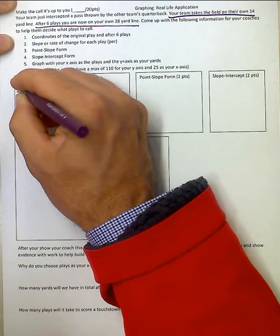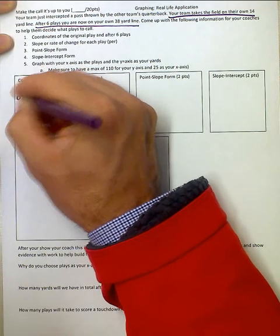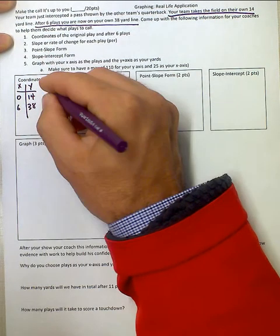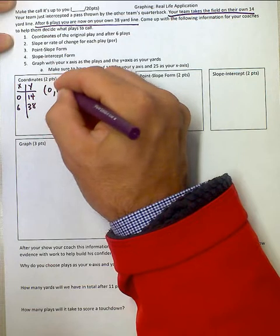This is where your coordinates come from. You could do it as a table, 0 and 14, or you could do it as coordinates, 0 and 14, 6 and 38.